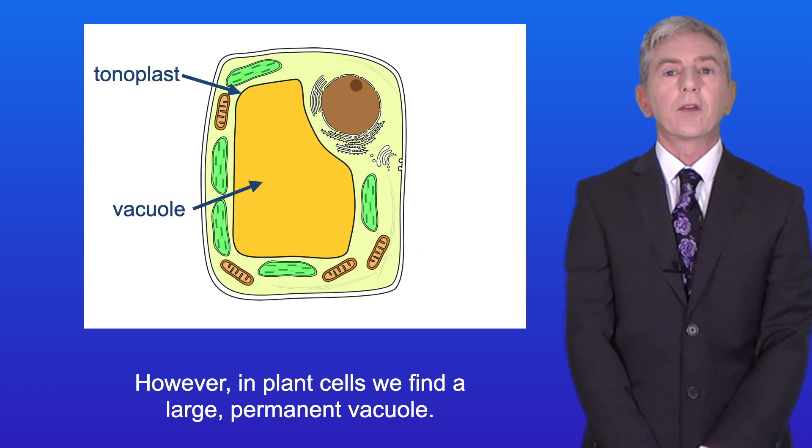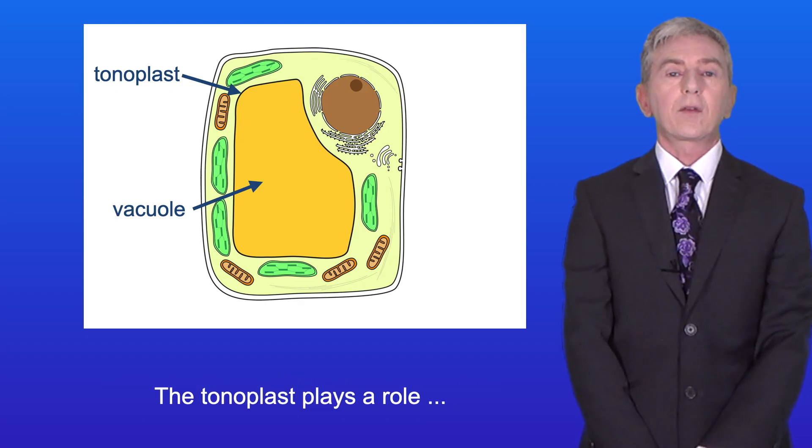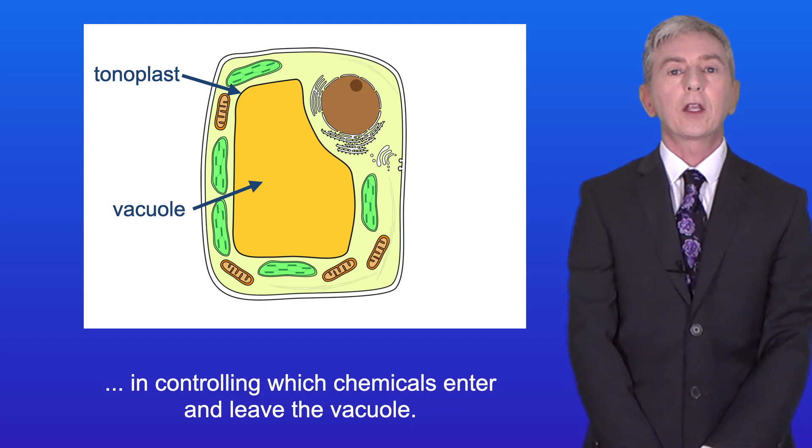However in plant cells we find a large permanent vacuole. A plant cell vacuole is surrounded by a membrane called the tonoplast. The tonoplast plays a role in controlling which chemicals enter and leave the vacuole.